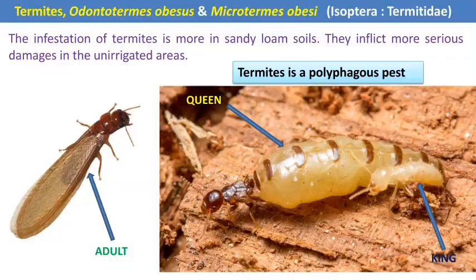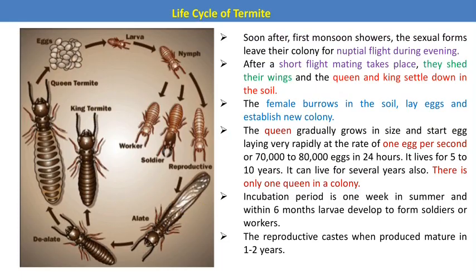The next pest is a subterranean pest — the social insect called termites, also known as white ants. Two species are Odontotermes obesus and Microtermes obesi. These are polyphagous pests affecting many crops. The order is Isoptera. Being a social insect, polymorphism is present, with four different castes: king, queen, soldier, and workers. The worker is the damaging stage. Termite infestation is more severe in sandy loam soil and in unirrigated areas.